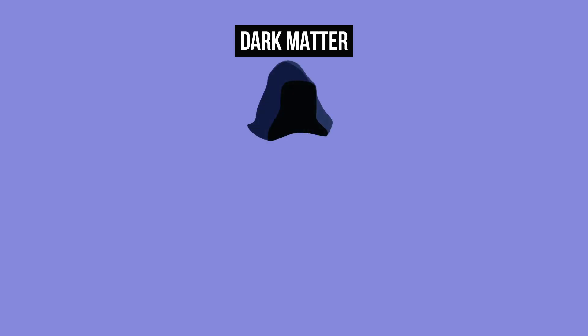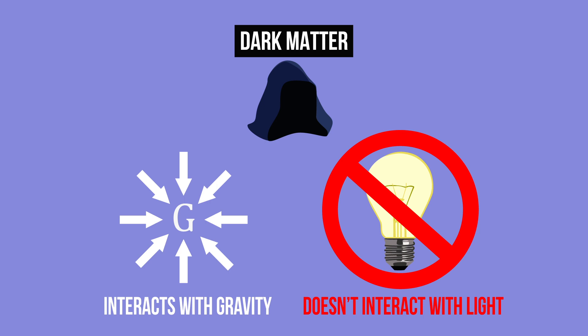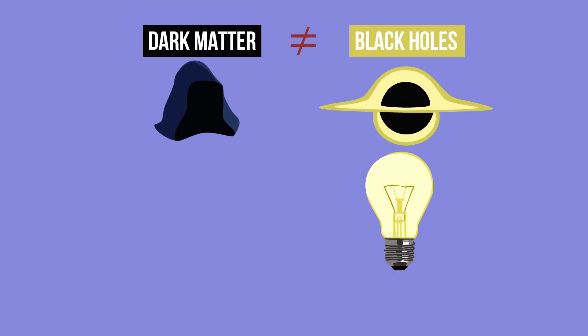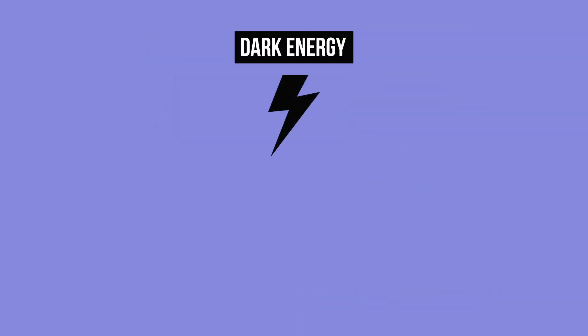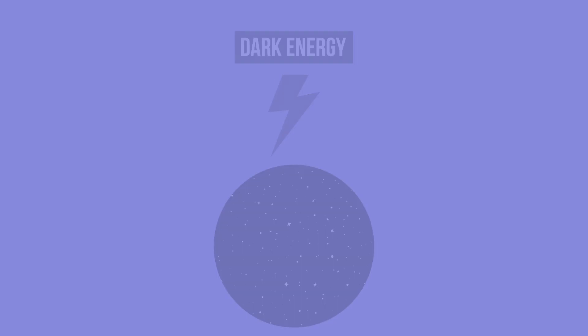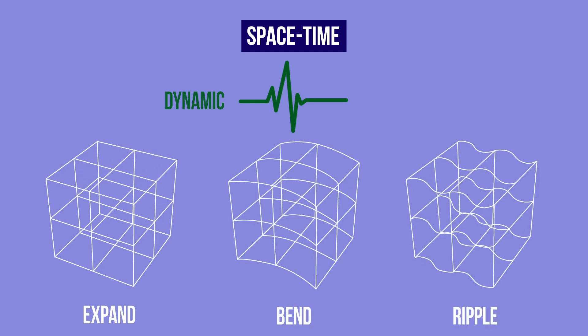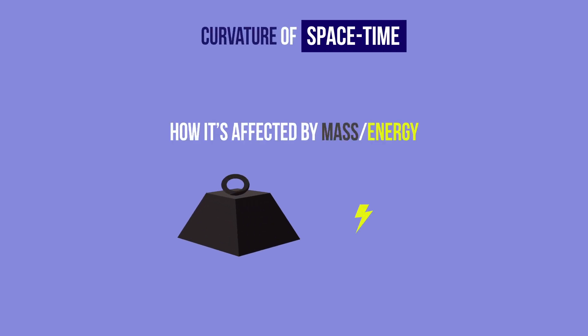Not much is known about these two last entities. Dark matter is a hypothetical entity scattered all over space that has gravity but, contrary to regular matter, doesn't emit or affect light. It's a different thing though than black holes — ordinary matter so dense that nearby objects are violently affected. Dark energy is the mysterious entity responsible for the expansion of the universe. As to space-time itself, it's a dynamic thing that can expand, bend, or ripple. These phenomena can all be explained by one concept: the curvature of space, which indicates how space-time is warped by mass or energy.